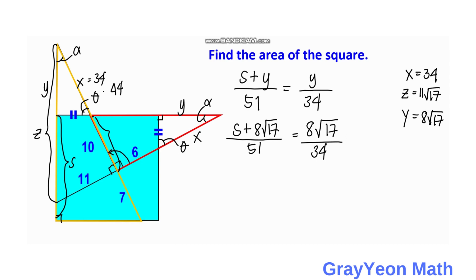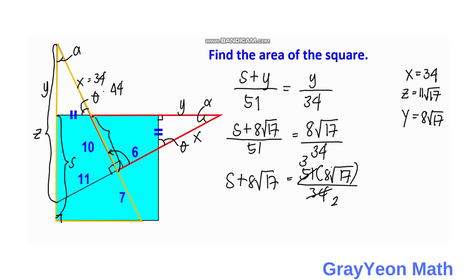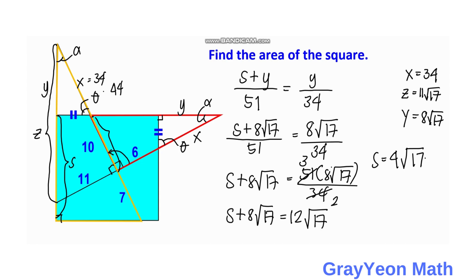Cross-multiplying gives s + 8√17 = 51 × 8√17/34. Simplifying 51/34 by dividing by 17 gives 3/2, so the right side is 3/2 × 8√17 = 12√17. Transposing 8√17 to the right-hand side, we have s = 12√17 − 8√17 = 4√17 units.